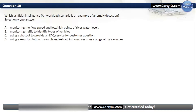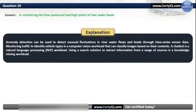Question 10. Which artificial intelligence workload scenario is an example of anomaly detection? Options: A. Monitoring the flow speed and high/low points of river water levels, B. Monitoring traffic to identify types of vehicles, C. Using a chatbot to provide an FAQ service for customer questions, or D. Using a search solution to search and extract information from a range of data sources. The correct answer is A. Anomaly detection can be used to detect unusual fluctuations in river water flows and levels through time series sensor data. Monitoring traffic is a computer vision workload; a chatbot is an NLP workload; using a search solution is a knowledge mining workload.